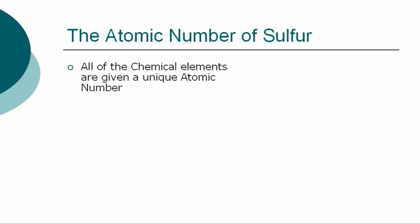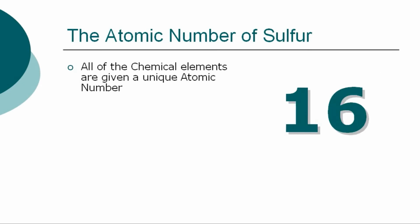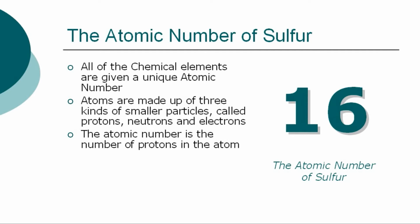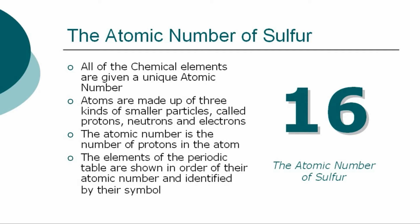All of the chemical elements are given a unique atomic number. The atomic number for sulfur is 16. Atoms are made up of three kinds of smaller particles, called protons, neutrons, and electrons. The atomic number is the number of protons in the atom.